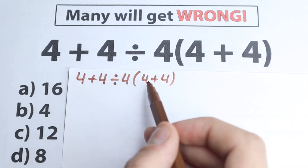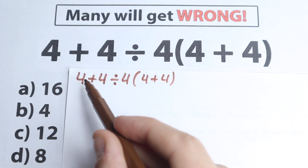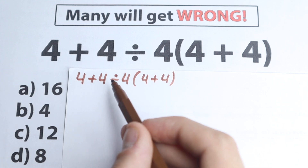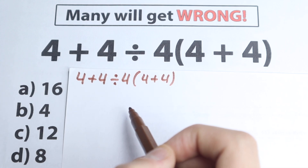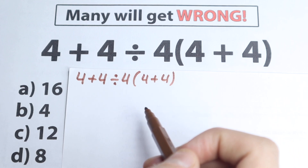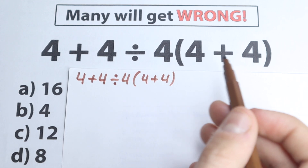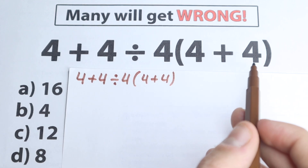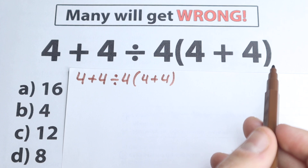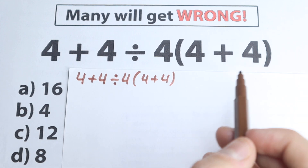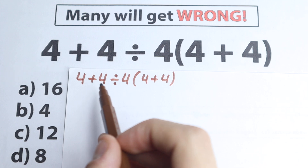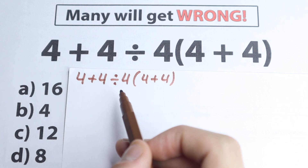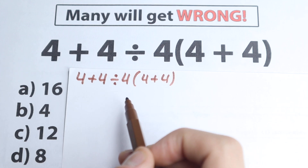Do we need to divide first, then parentheses, then multiplication or addition? We have a lot of combinations, but in math we only have one correct solution. Like an equation that has one or two roots — there is only one correct answer here. So let's look at this from another perspective.